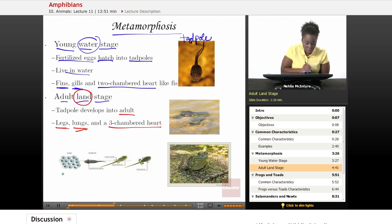Here's a diagram to show that the development of an amphibian starts out as eggs. Then you have the tadpole stage. And then you go into the adult stage. And the adult stage is when they develop their legs, lungs, and three-chambered heart.